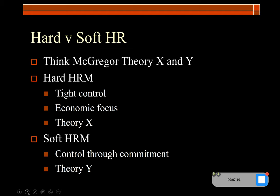For those of you familiar with McGregor's Theory X and Theory Y, that's quite a good way of thinking about hard and soft HR. McGregor believed that managers take two different approaches when managing employees. Theory X holds that workers are lazy, need to be tightly regulated and controlled, and will be motivated by money — offering incentives and rewards. It's the carrot-and-stick approach: use the carrot to make them work harder, but if they don't work hard there will be repercussions. Theory X represents hard HRM — controlling employees quite tightly.